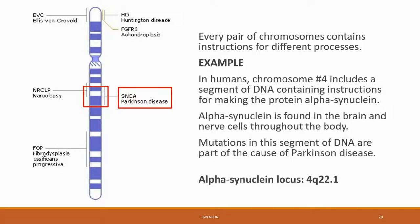Here's an example of a gene located on a chromosome. It's found on chromosome 4, and it contains information for making the protein alpha-synuclein. Alpha-synuclein is found in the brain and nerve cells throughout the body. Mutations in this segment of DNA are part of the cause of Parkinson's disease.